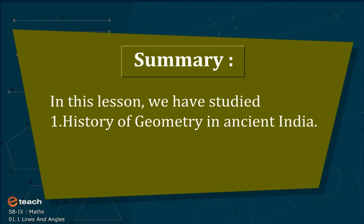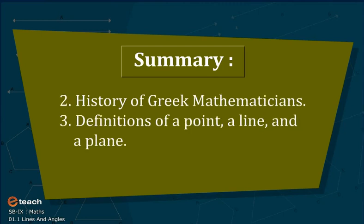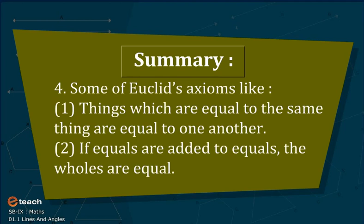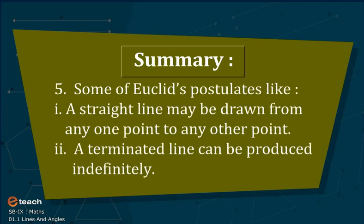Summary: In this lesson we have studied — 1. History of geometry in ancient India. 2. History of Greek mathematicians. 3. Definitions of a point, a line and a plane. 4. Some of Euclid's axioms, like: things which are equal to the same thing are equal to one another, and if equals are added to equals the wholes are equal. 5. Some of Euclid's postulates, like: a straight line may be drawn from any one point to any other point, and a terminated line can be produced indefinitely.